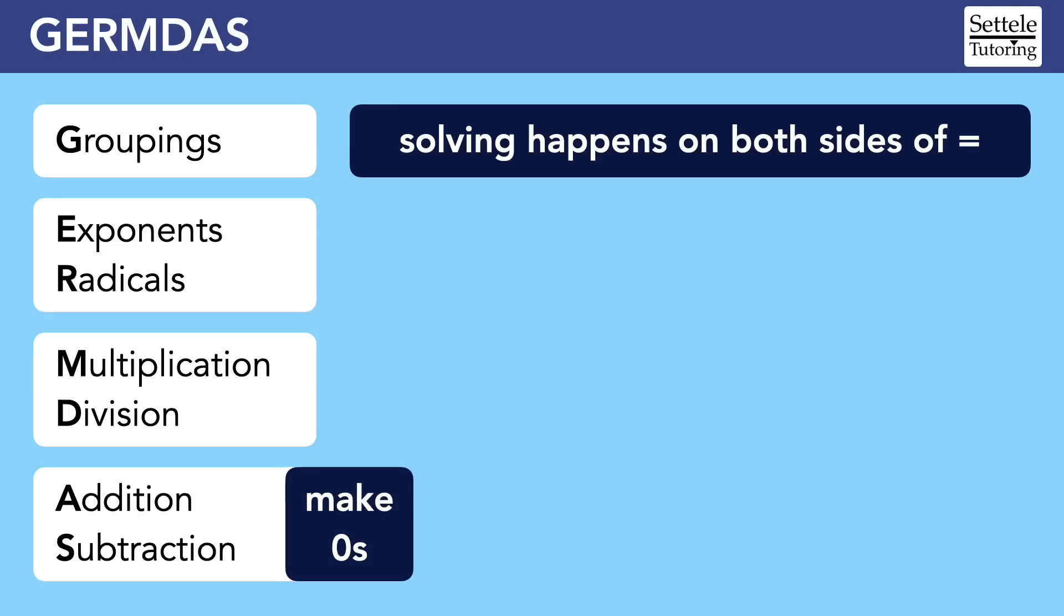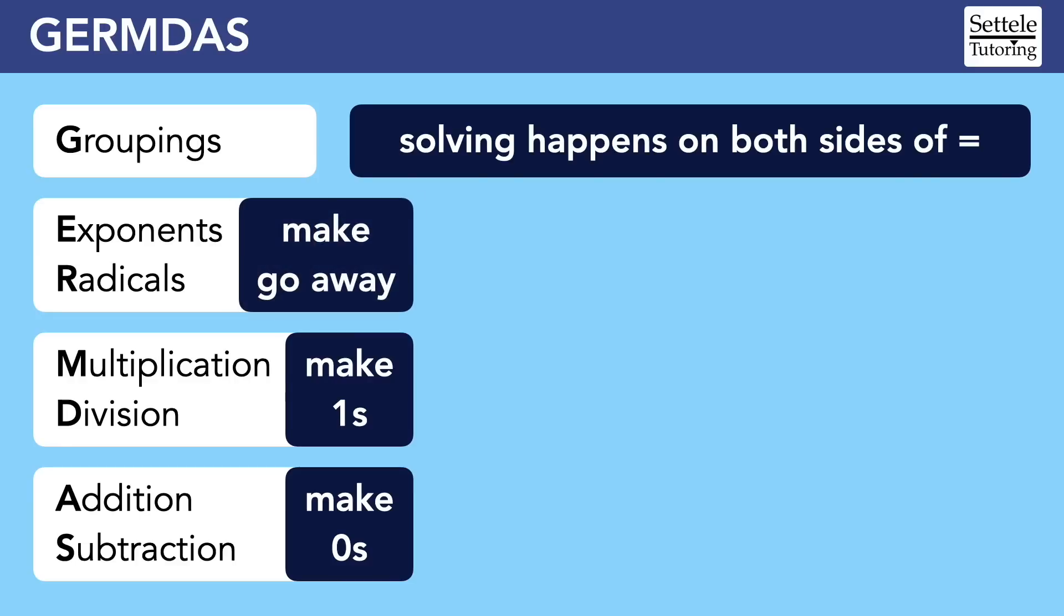When we do addition and subtraction, our goal is to make zeros. When we do multiplication and division, our goal is to make ones. And when we have exponents and radicals, our goal is to make them go away. Groupings make things a lot harder, but let's apply GERMDAS to a very simple algebra equation to see how it works.